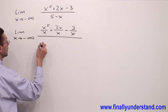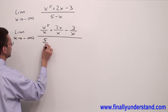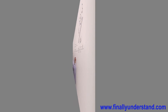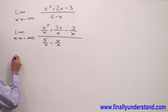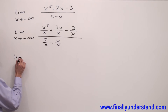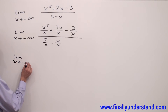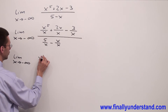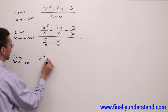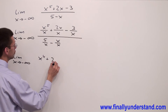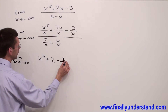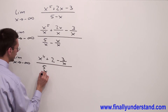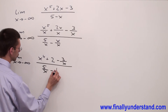And we have 5 over x minus x, minus x over x. Reducing the fractions, we get limit x going to negative infinity: x to the fifth over x is x to the fourth, plus 2x over x is 2, minus 3 over x, all over 5 over x minus 1.